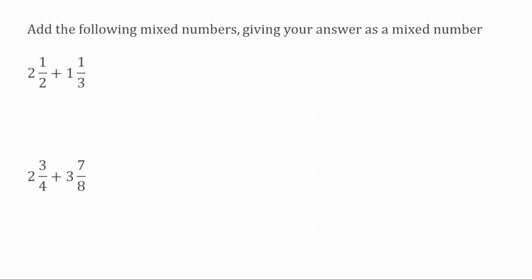For this first example, we've got two and a half, add one and a third. Looking at my whole number parts first, I've got two in the first mixed number and one in the second. So we're going to add those together — two add one — which gives us three.